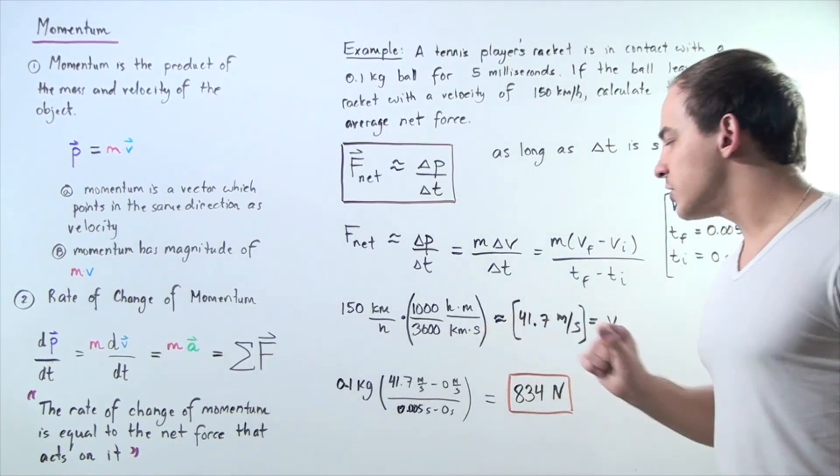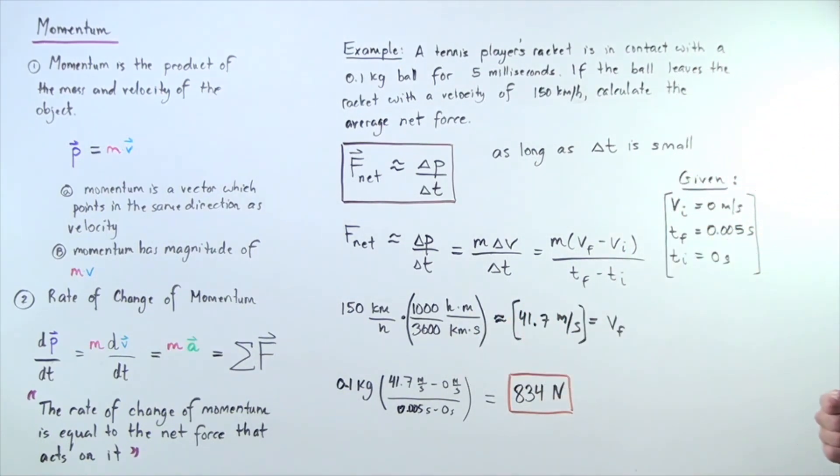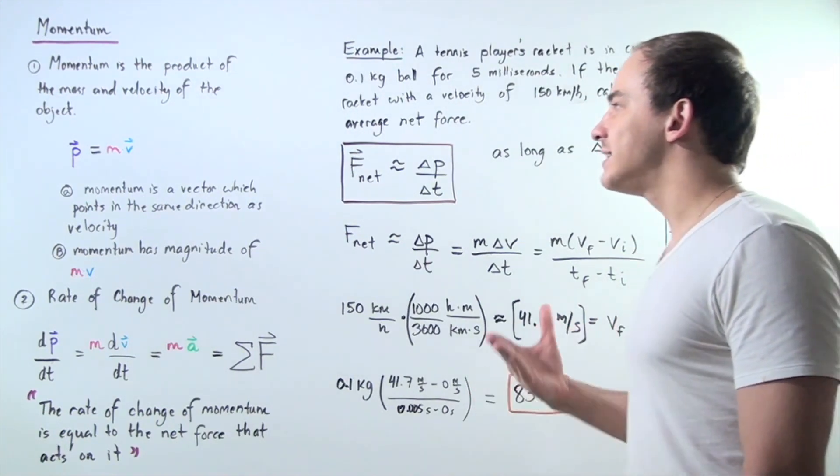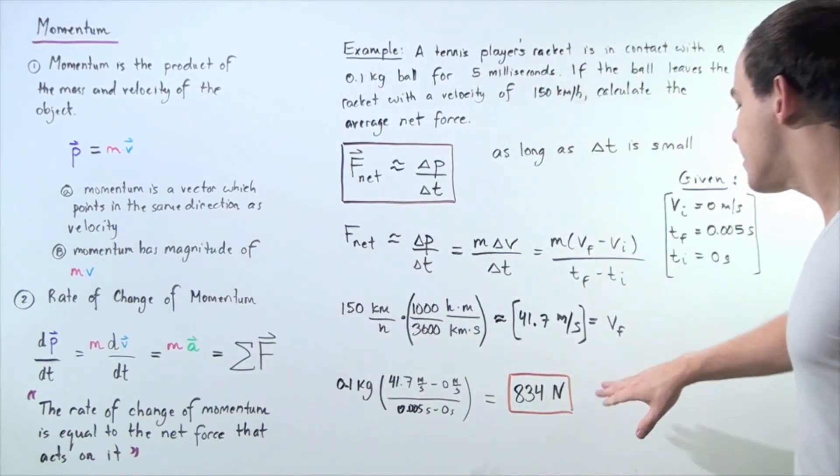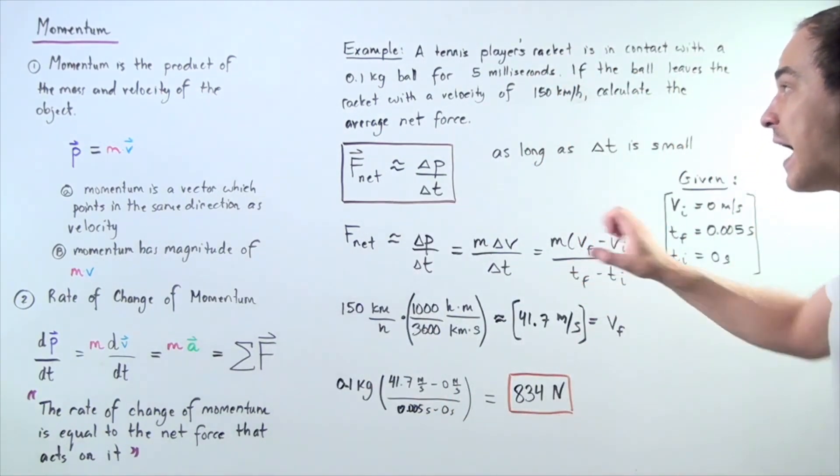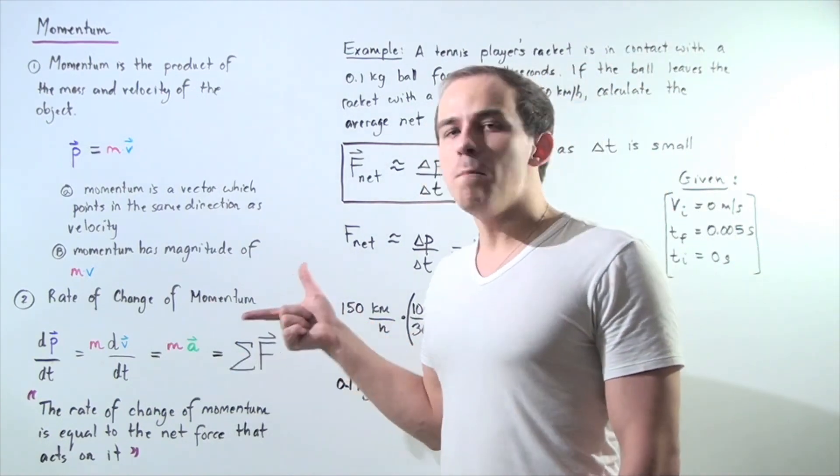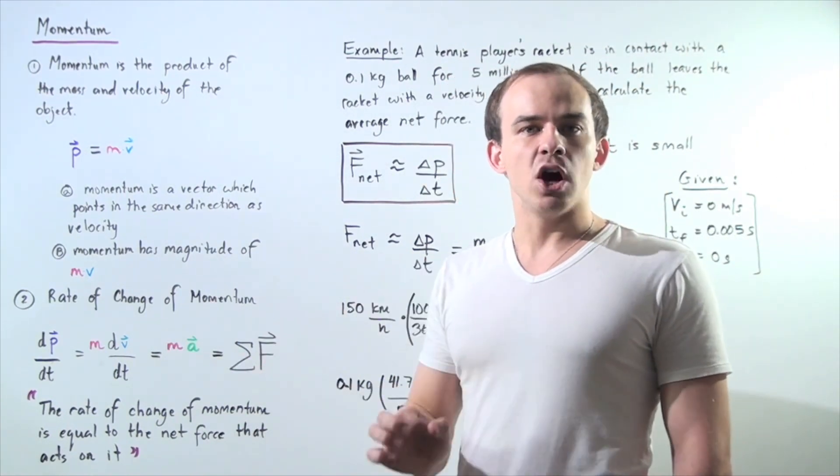We plug these values into our equation, we multiply, and we get 834 newtons. So the average net force acting on our object, on the ball by the racket, has this magnitude. And we found it using our momentum or rate of change of momentum.